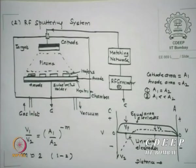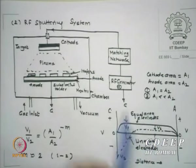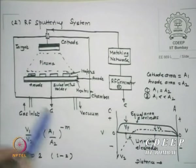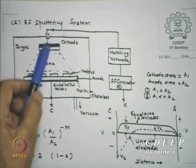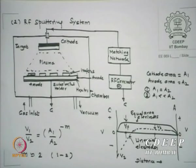We discussed area ratios: smaller area cathode compared to the anode. If cathode area is A1 and anode area is A2, we have two possibilities — areas are equal or cathode is smaller than anode. I apply RF to the cathode through a matching network — needed for impedance matching. The matching network is typically an LC network with variable components. A matching network system costs 6 lakhs in the market.